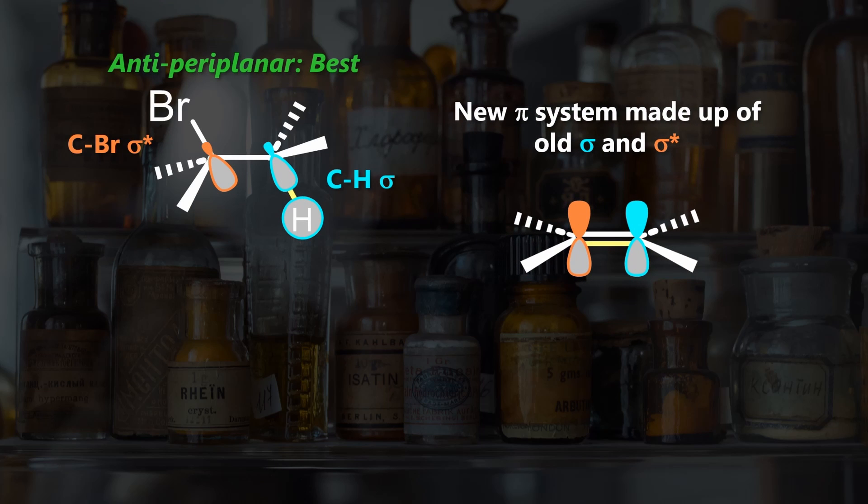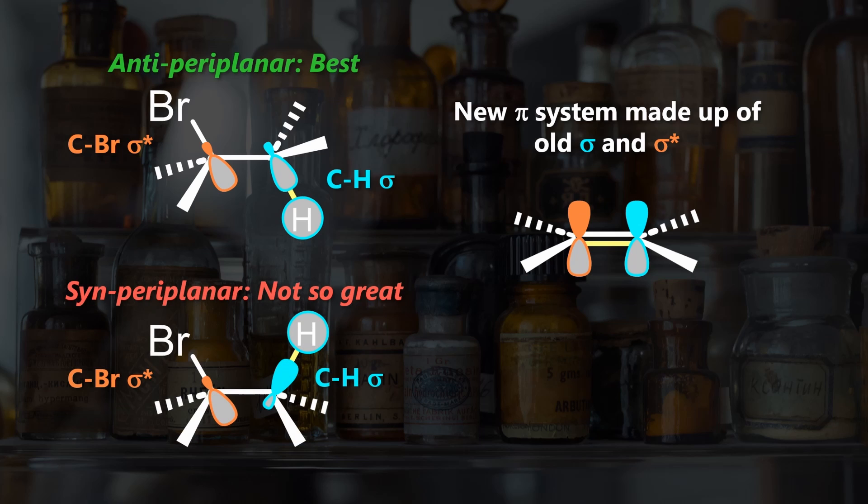An anti-setup maximizes this overlap, but syn-periplanar arrangements are theoretically possible. The orbitals would also be in the same plane, but you can see that overlap is weaker due to worse alignment.